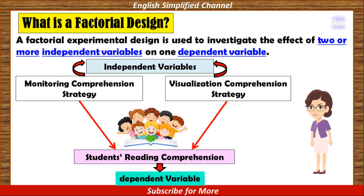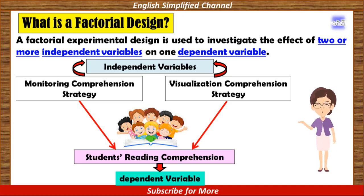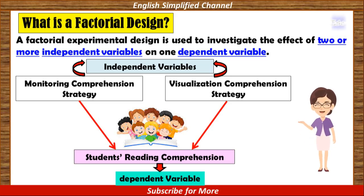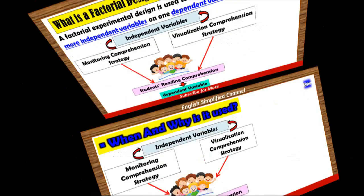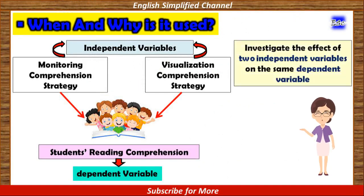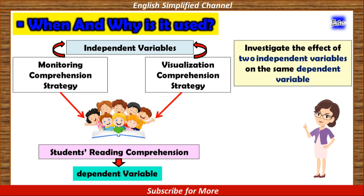So that is what is meant by a factorial experimental design, in which a factorial experimental design is used to investigate the effect of two or more independent variables on one dependent variable. Factorial design is used whenever a researcher wants to investigate the effect of two independent variables on the same dependent variable.